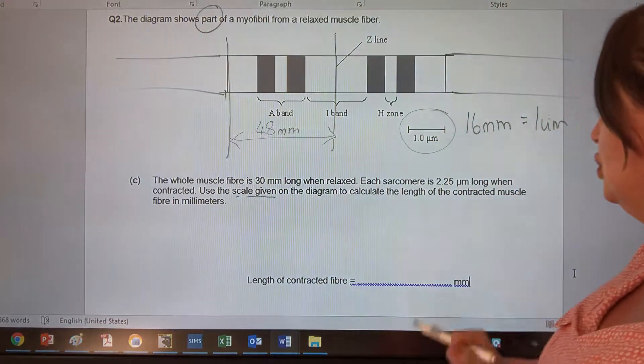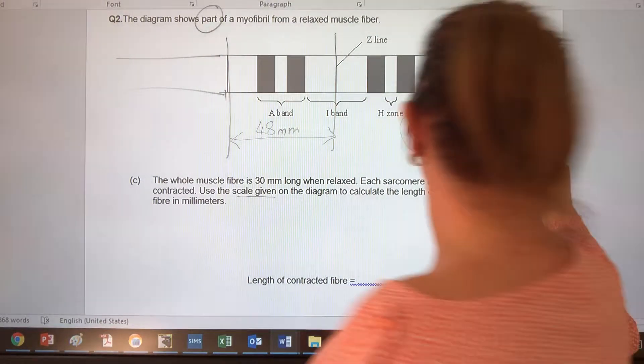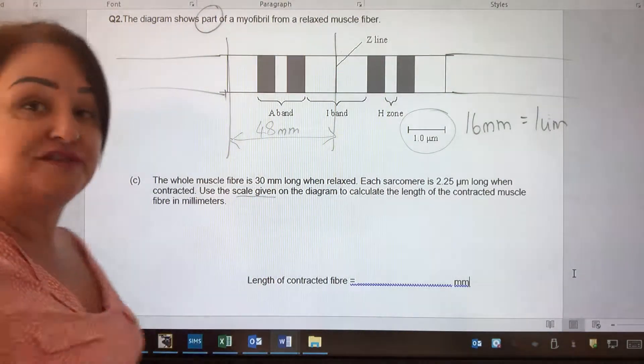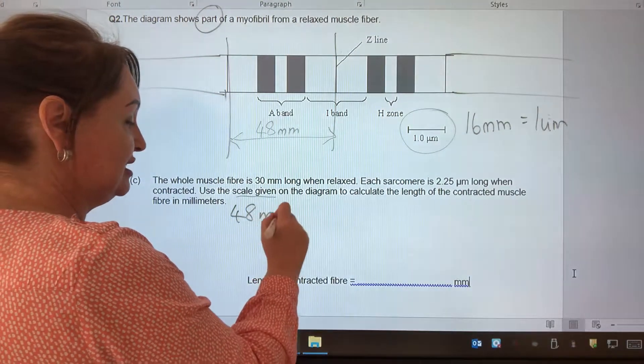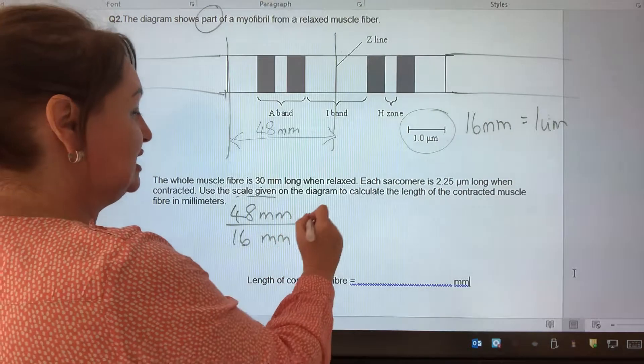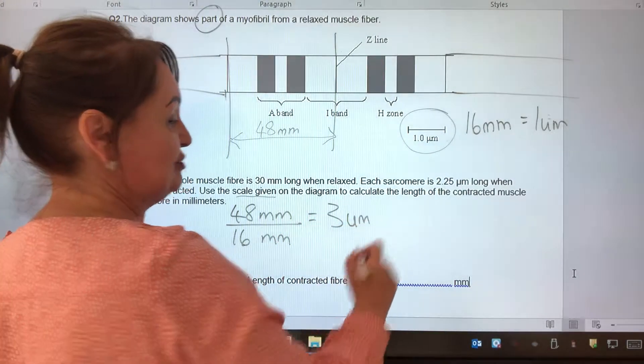So therefore, if 16 millimeters equals 1 micrometer, then how many does 48 measure? Well, 48 millimeters divided by 16 millimeters gives me 3. 3 micrometers.